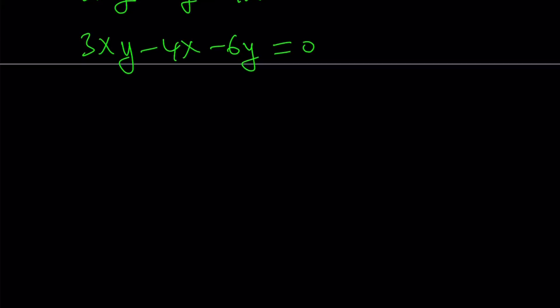Now we can take out an x but I want to have a coefficient of 1 for y. That's why instead of taking out an x I'm going to take out a 3x. Let me show you what that means.